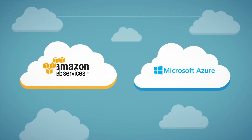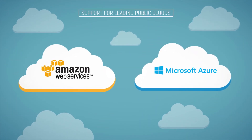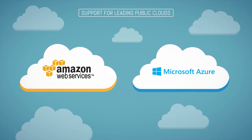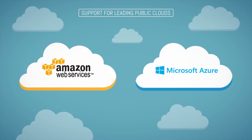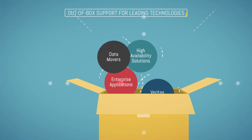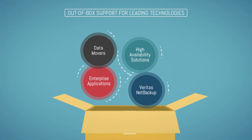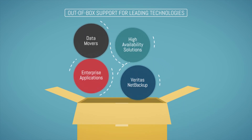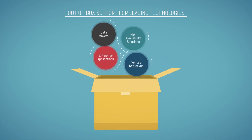Resiliency Platform lets you recover or migrate workloads to and from leading public clouds like AWS and Azure with built-in data movement. And out-of-the-box support for leading enterprise applications, availability solutions, and data movers, including Veritas NetBackup, means that you can do things your way.